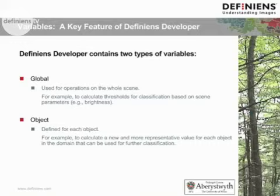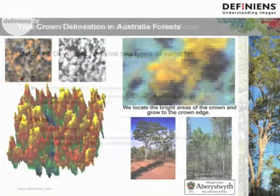The second are object variables. These are defined on an object basis — for example, to calculate a new and more representative value for each object in the domain that could be used for further classification.